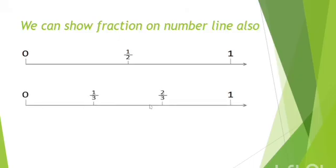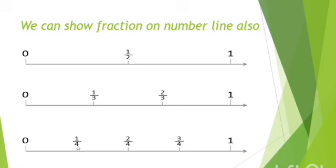Next, we divide the line in 3 equal parts and mark the points 1 upon 3 and 2 upon 3. Next, now divide the line in 4 equal parts and mark the points 1 upon 4, 2 upon 4 and 3 upon 4.